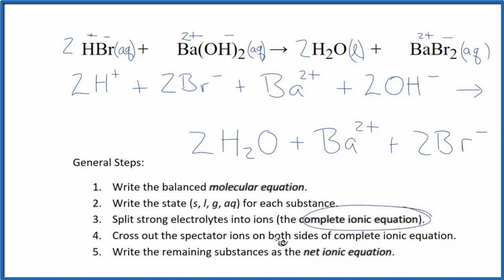This is the complete ionic equation, also called total ionic equation. Now we'll cross out these spectator ions that are on both sides. As I look at the reactants here and the products, I can see I have two bromide ions here in the reactants, two in the products. Cross those out.